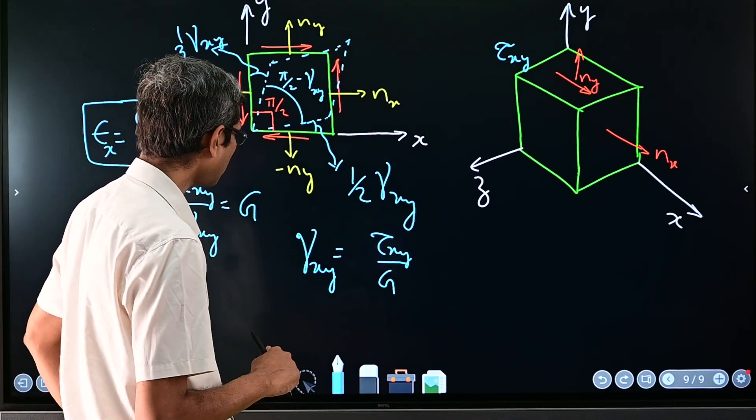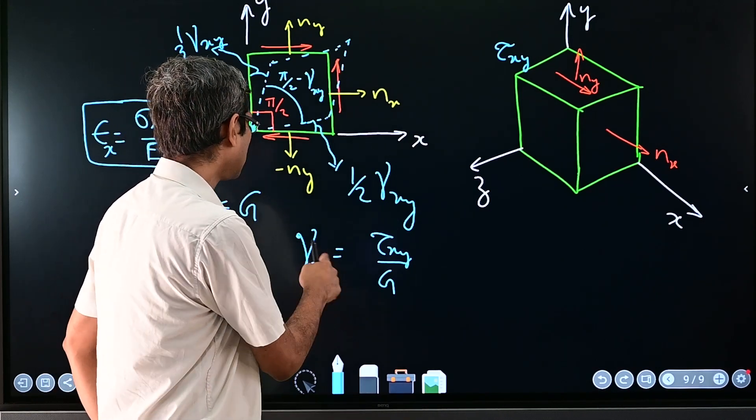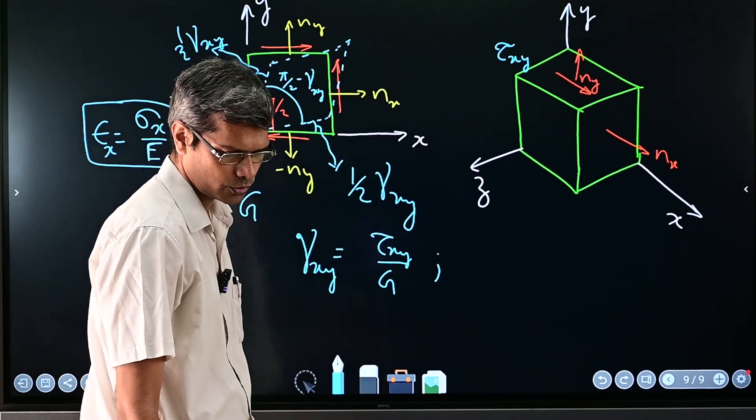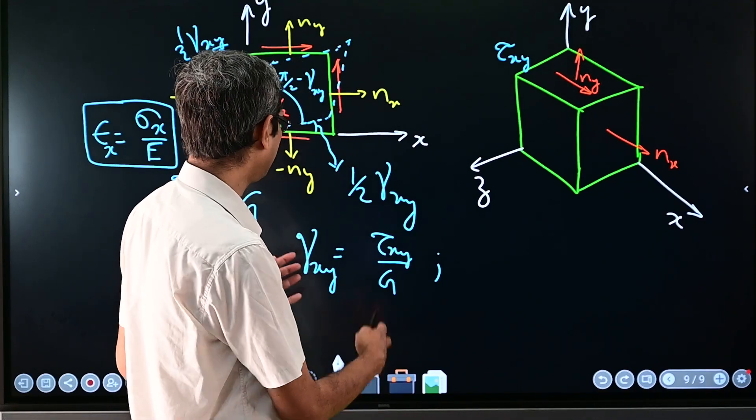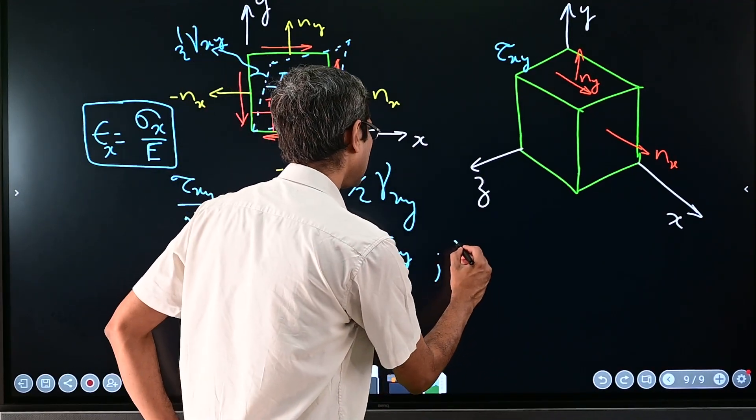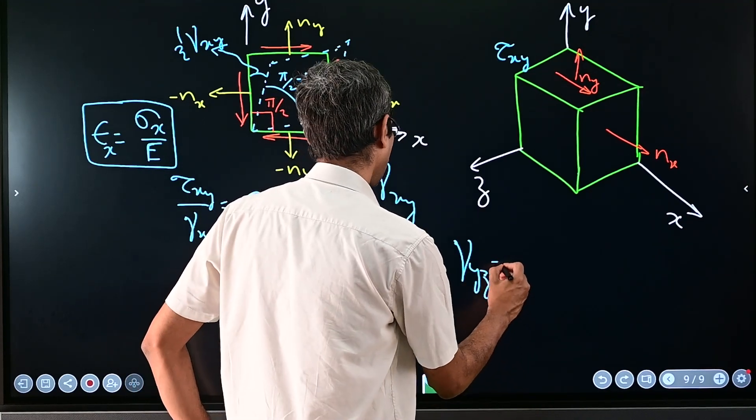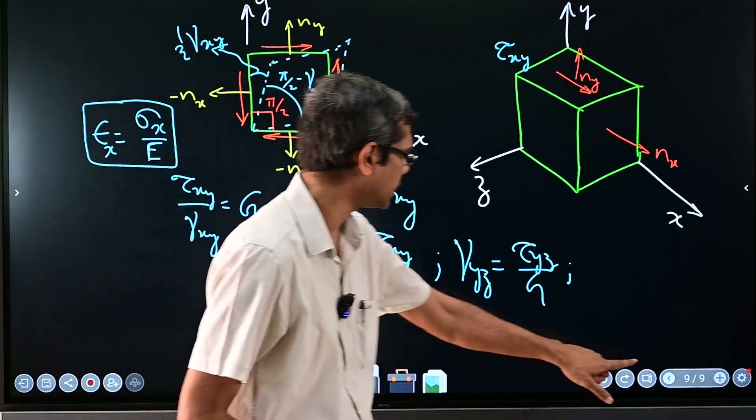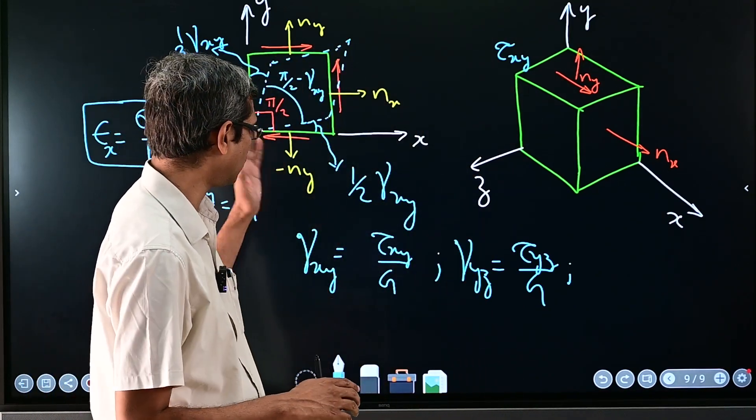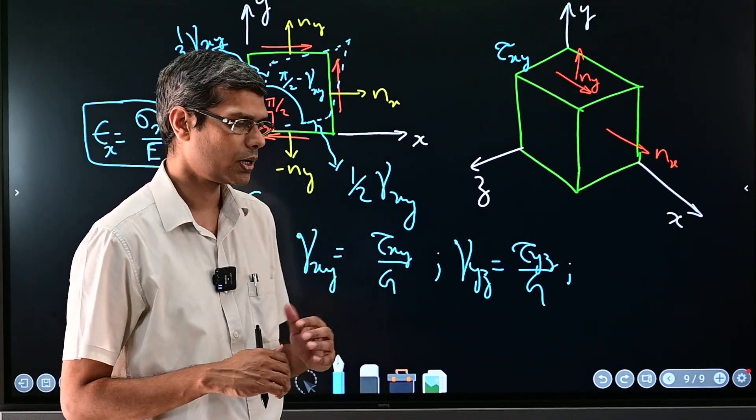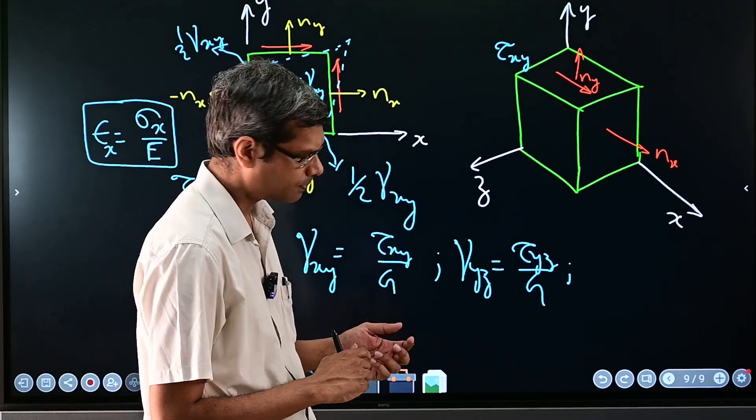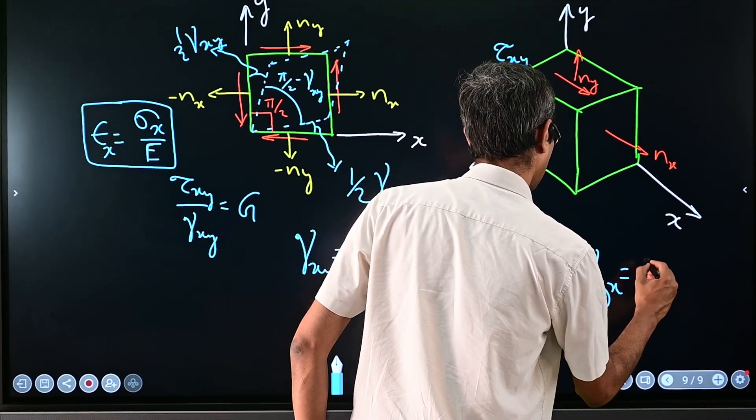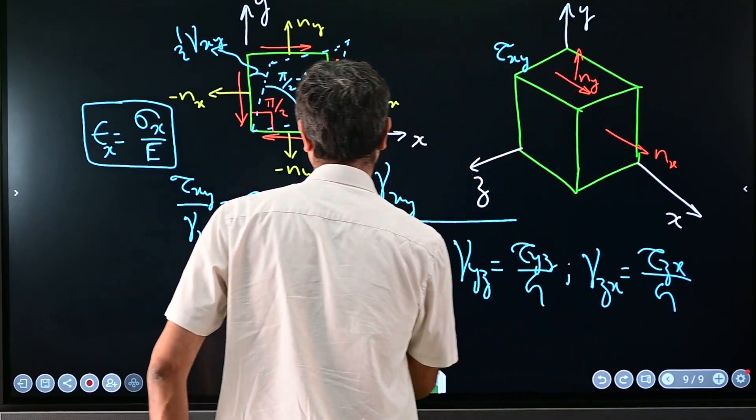That's very important because you need a pair of planes to initially define this 90 degree which you will see how much it has changed after deformation, and that change you will define as the shear strain that angle. So so these three pairs of equation if you wish you can write them: gamma_yz equal to tau_yz over G like that, and gamma_zx is tau_zx over G.